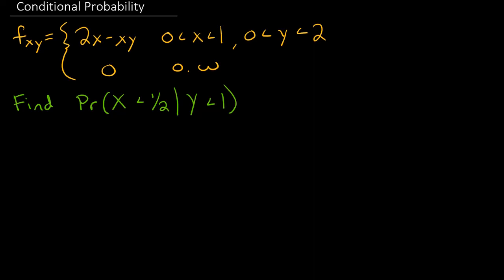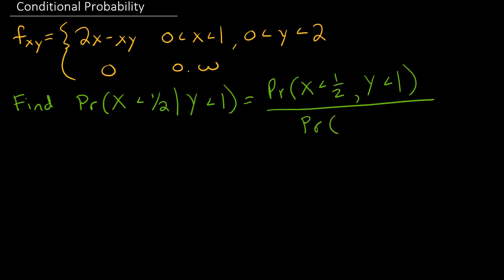In this video, we're going to discuss how to calculate this conditional probability where y is less than 1. Given y is less than 1, find the probability that x is less than 1 half. So first, let's write down the definition for conditional probability: it's the joint probability — the probability that x is less than 1 half and y is less than 1 — divided by the probability that y is less than 1.